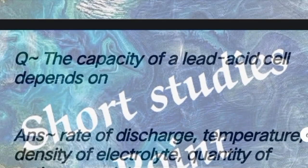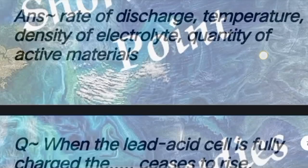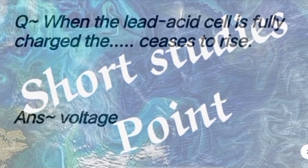Next question: A lead acid cell can be. Answer: Recharged. Next question: The capacity of a lead acid cell depends on. Answer: Rate of discharge, temperature, density of electrolyte, and quantity of active material. Next question: When the lead acid cell is fully charged, the dash tends to rise. Answer: Voltage.